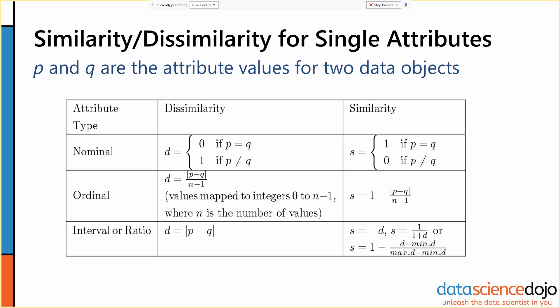for dissimilarity, we'll often map our values to integers from zero to n minus one, and then take the difference in those integer values and divide by the maximum,